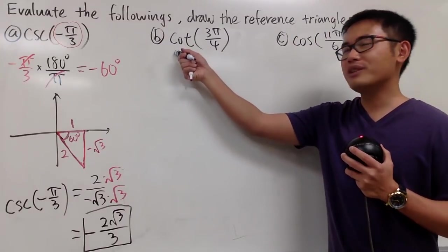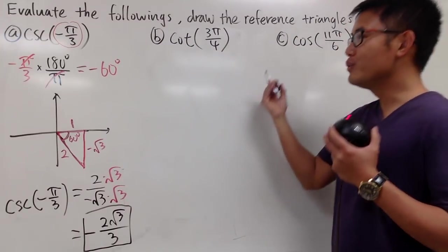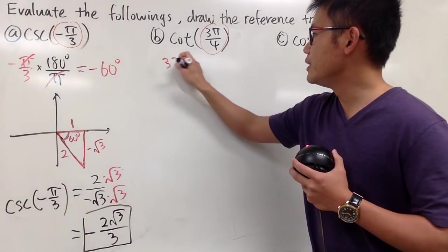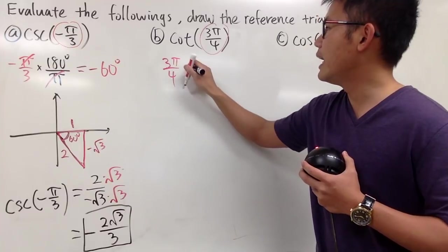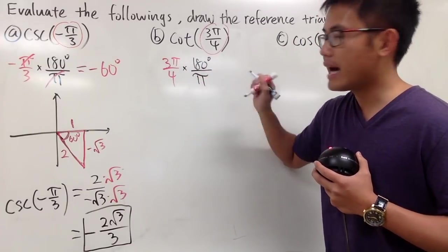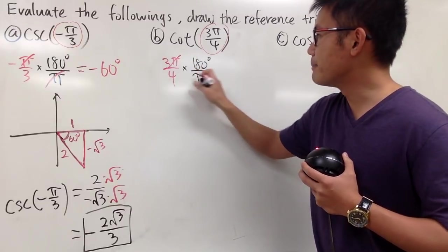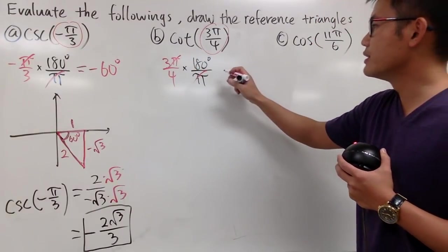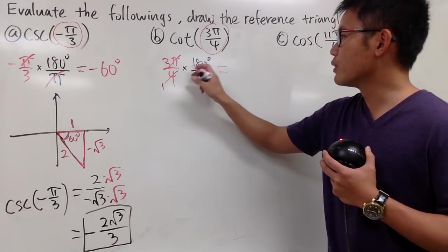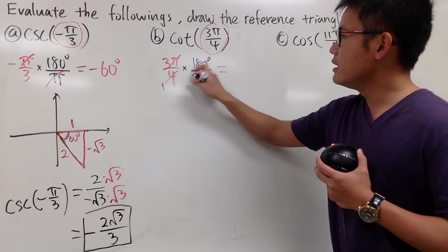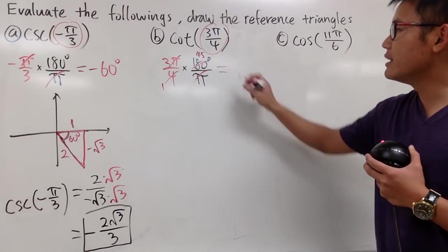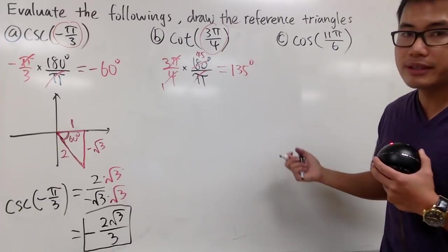Now, cotangent of 3 pi over 4. Do the same thing. Here is the angle in radians. Let's put that down: 3 pi over 4, and we multiply this by 180 degrees over pi. The pi and pi will cancel, and then we can reduce. 4 goes into 180 forty-five times, and then 3 times 45 is going to be 135 degrees.